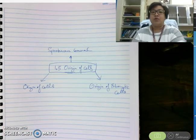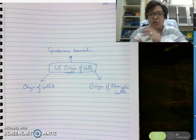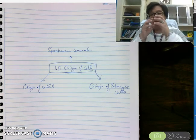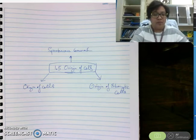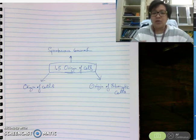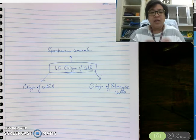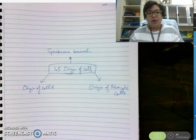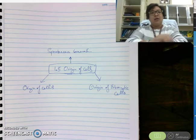You might even believe in spontaneous generation. For example, when you leave a piece of bread out in the open and come back after one week, you'll see molds growing around the bread. Where did that come from — did it just spontaneously appear? Of course we say no, but long ago, people actually believed that living organisms could appear spontaneously.